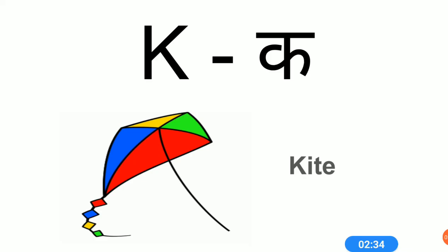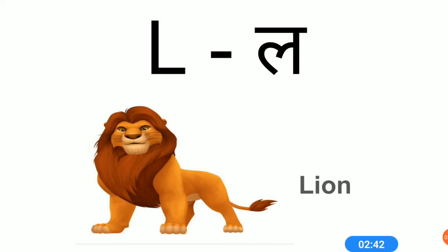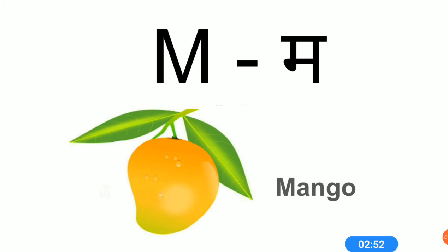K sound is K. K for kite. L sound is L. L for lion. M sound is M. M for mango.